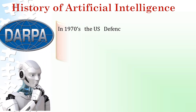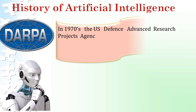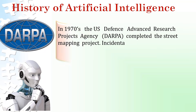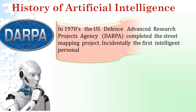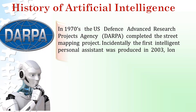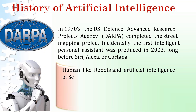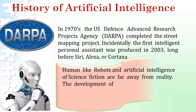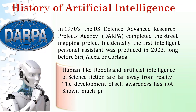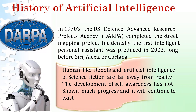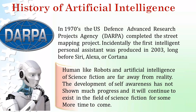In the 1970s, the US Defense Advanced Research Projects Agency, DARPA, completed the street mapping project. Incidentally, the first intelligent personal assistant was produced in 2003, long before Siri, Alexa, or Cortana. Human-like robots and the artificial intelligence of science fiction are far away from reality. The development of self-awareness has not shown much progress and will continue to exist in the field of science fiction for some time to come.